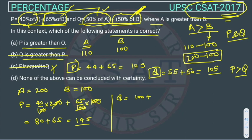50% of A. 50% of A will be 100 and 50% of B. B value is 100, so what will be 50% of B? It will be 50. Q is 150. Here we are getting Q greater than P, because P is 145 and Q is 150.